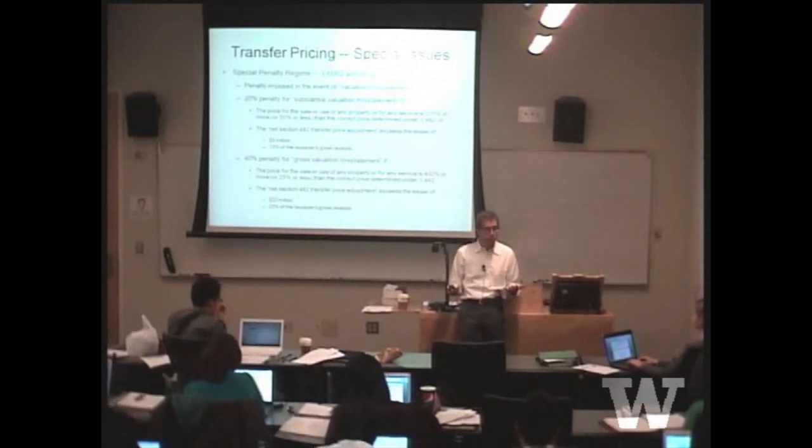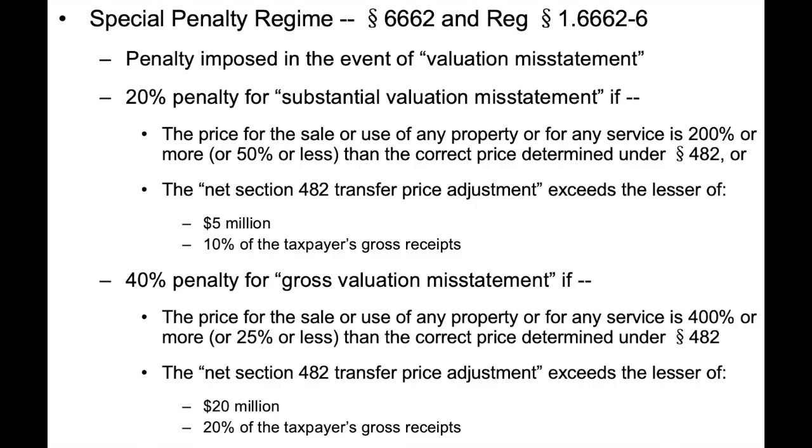Recognizing that this was happening, Congress at some point said, well, I think we need to provide some serious penalties if you have been so greedy with respect to how you did your transfer pricing. So you see this very large 20% or 40% penalty if you're far enough off on your pricing.